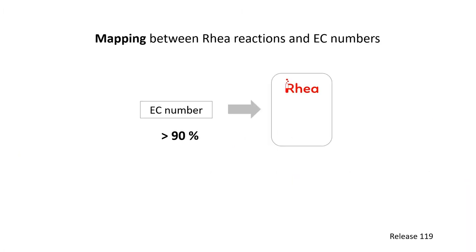As of the current RIA release, more than 90% of all EC numbers are mapped to a RIA reaction, and our biocurators aim at keeping RIA in sync with the enzyme classification. On the other hand, as RIA describes more enzyme reactions compared to EC numbers, just over half of the RIA reactions can be mapped to EC numbers.